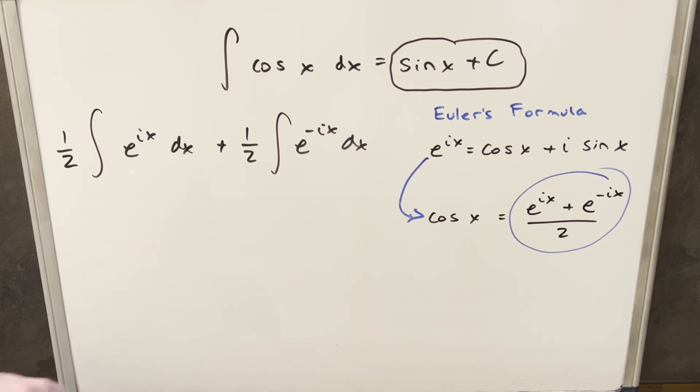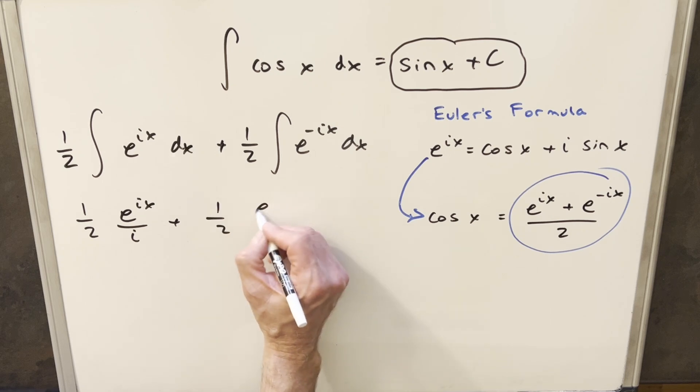And so next we'll just go ahead and integrate this. And we don't have to really worry about the fact that i is imaginary. We can just integrate it like any constant value. So what's going to happen is we'll have one half here, e^(ix). And we just have to take the i into the denominator. And then here for this one, we'll have one half e^(-ix). And here we'll have a minus i in the denominator.